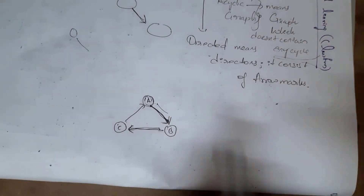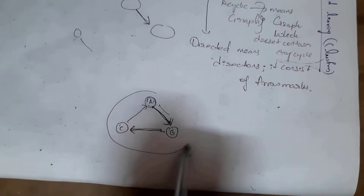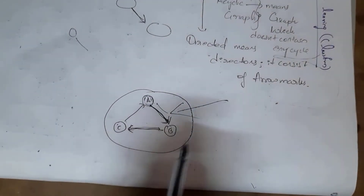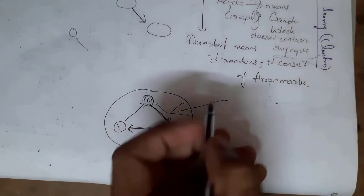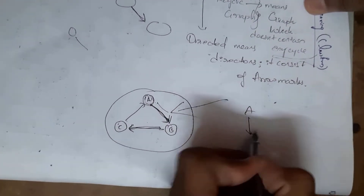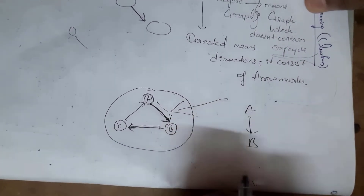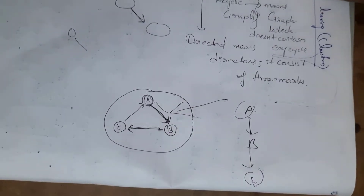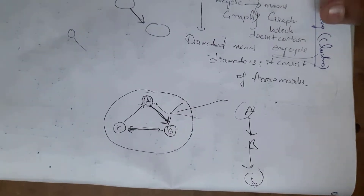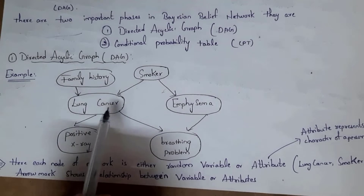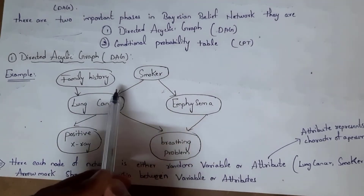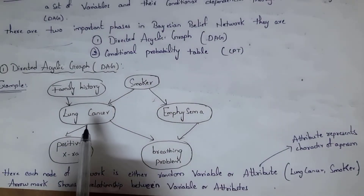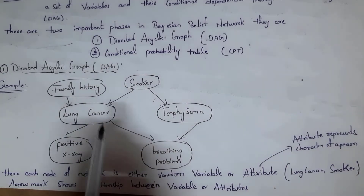Acyclic means a graph which does not form any cycle. For example, Node A passes to Node B and Node B passes to Node C — there is no cycle. So it is known as an acyclic graph. This is a Directed Acyclic Graph because it does not contain any cycle and it is directed.